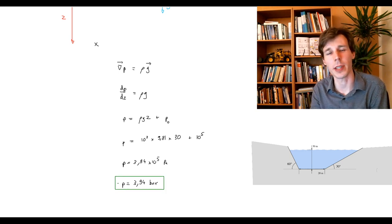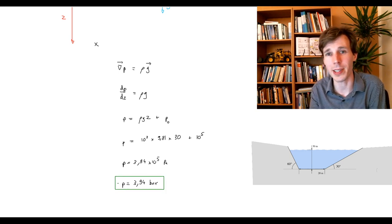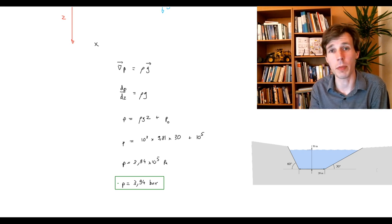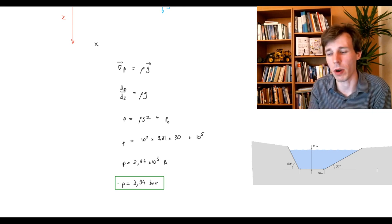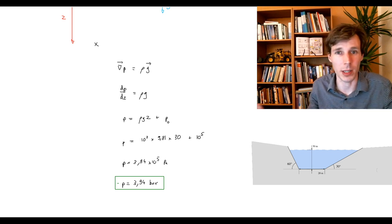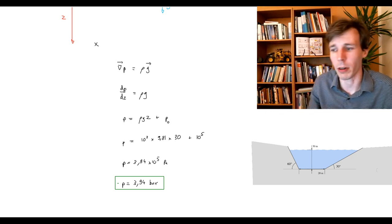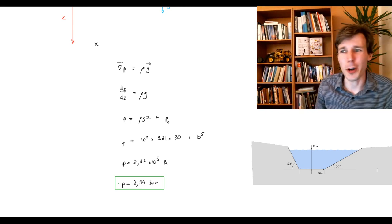And the rule of thumb is that pressure inside static water increases by about 0.1 bar per meter. So 10 meters is one bar, 30 meters is three bars more than the starting pressure. So here you go.